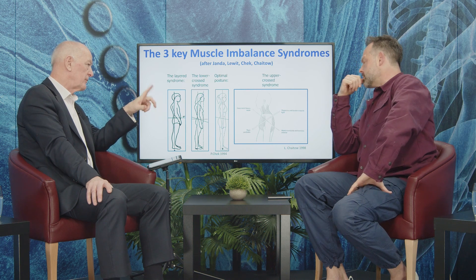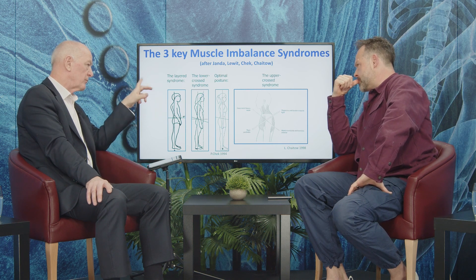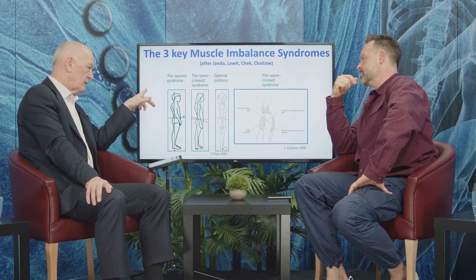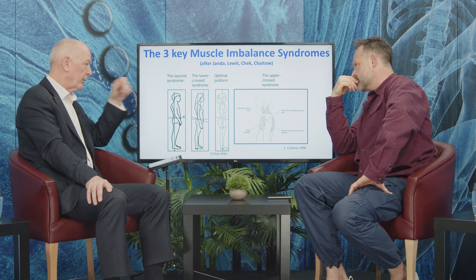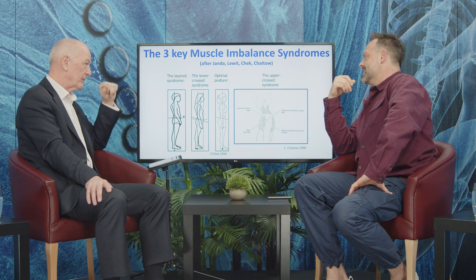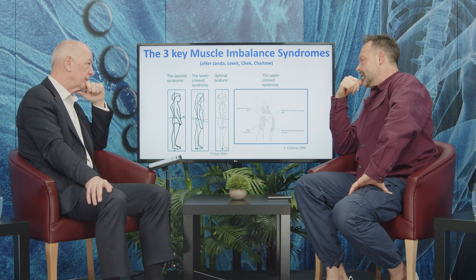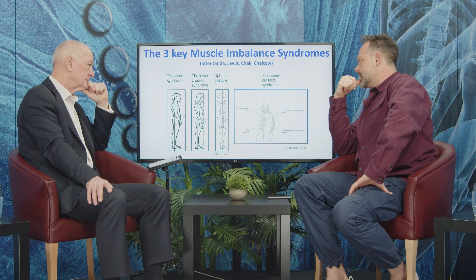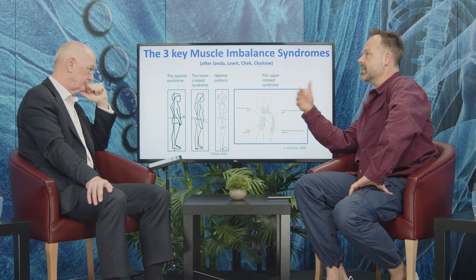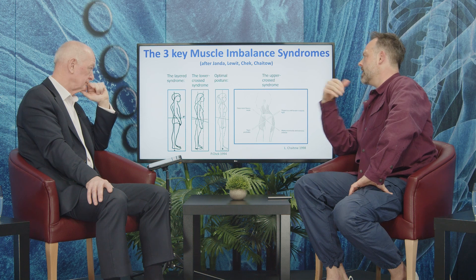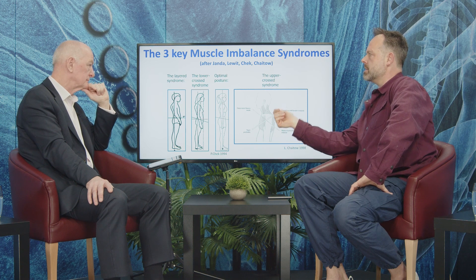When we talk about a syndrome, we're generally talking about symptoms. So are there classical symptoms for each — well, not the optimal posture, there shouldn't be any symptoms with that one. There's a raft of symptoms that can come as a result, and conditions that can arise as a result of a muscle imbalance syndrome.